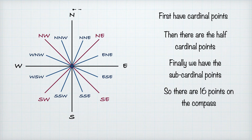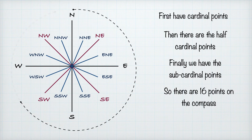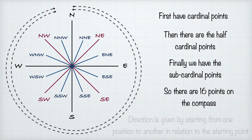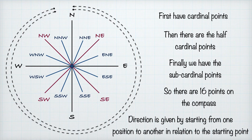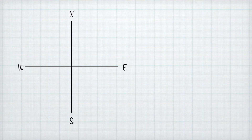So in total there are 16 compass points, and we can read direction in either way — clockwise or anti-clockwise. We read the direction starting from a given point, and we say this is the direction from this point to that point. Now let's look at a graphic example of this.